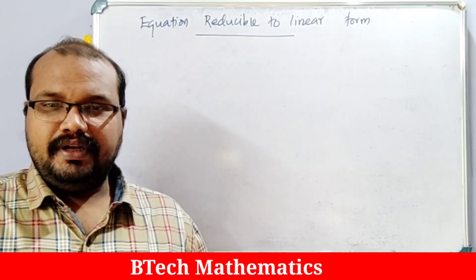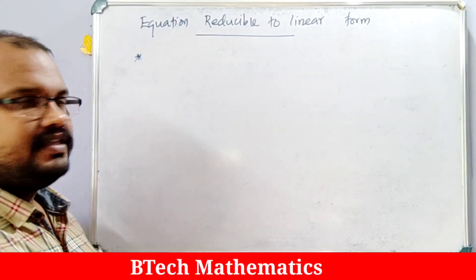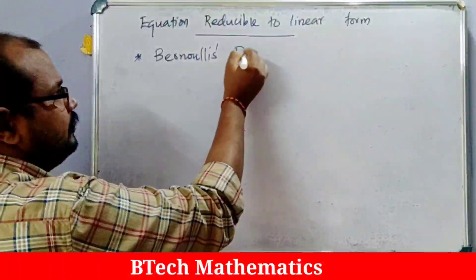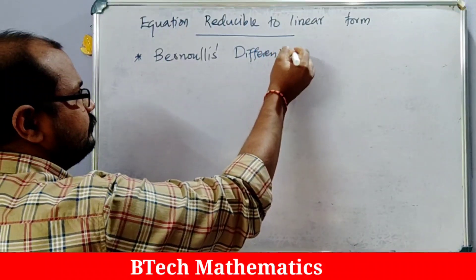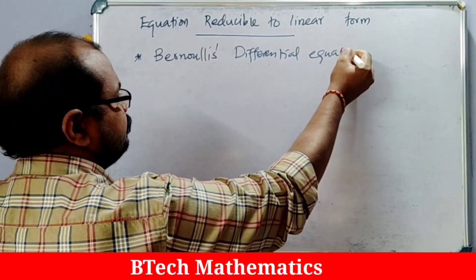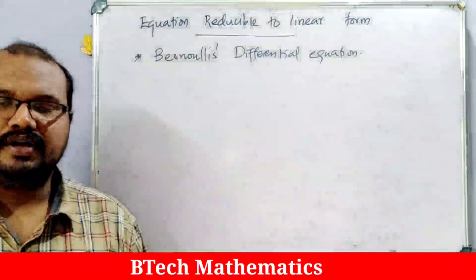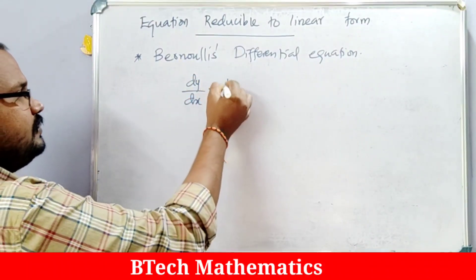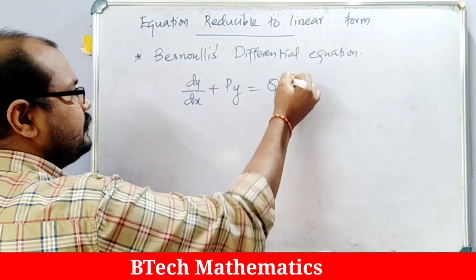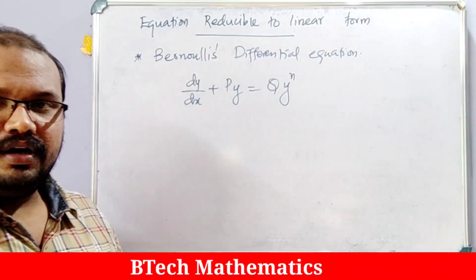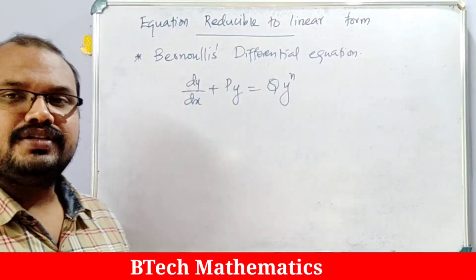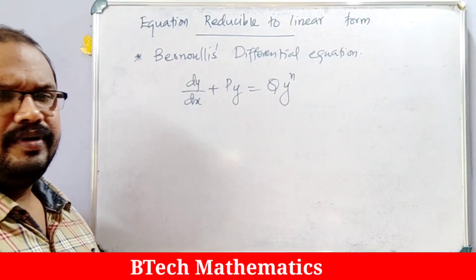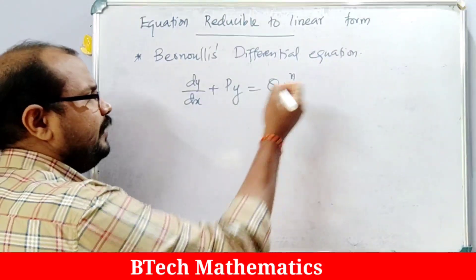We are moving to the topic: equations reducible to linear form. In this section we are discussing Bernoulli's differential equation. The equation of the form dy/dx + Py = Qy^n is called Bernoulli's differential equation, where P and Q are functions of x only or constants, similar to the linear differential equation — but we have a y^n term here.